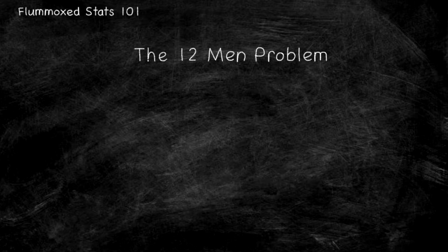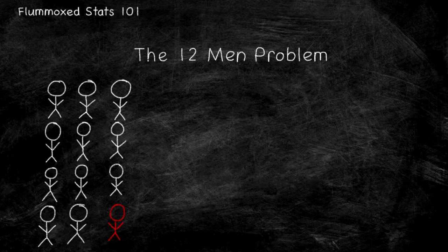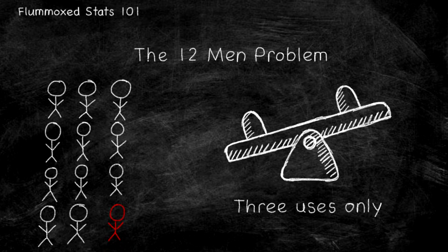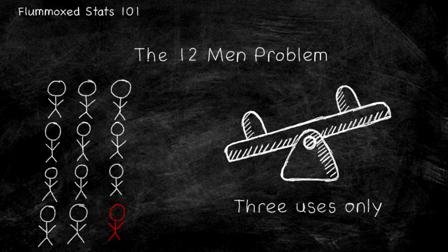There are 12 men on an island. 11 weigh exactly the same, but one of them is slightly heavier. You must figure out which. The island has no scales, but there is a seesaw, and the exciting catch — you can only use it three times. The 12 men question is a difficult one to say the least. How do you actually solve it?